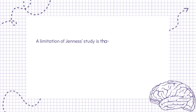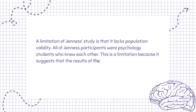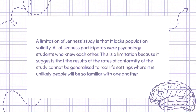A limitation of Jeunesse's study is that it lacks population validity. All of Jeunesse's participants were psychology students who knew each other. This is a limitation because it suggests that the results and rates of conformity of the study cannot be generalized to real-life settings where it is unlikely people will be so familiar with one another.